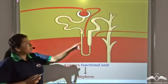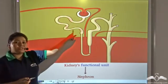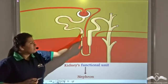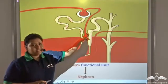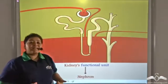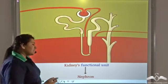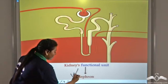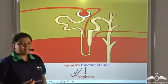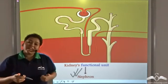The Bowman's capsule, proximal convoluted tubule, the loop of Henle and the distal convoluted tubule forms the kidney's functional unit which is known as the nephron. Nephron is the functional unit of the kidney.